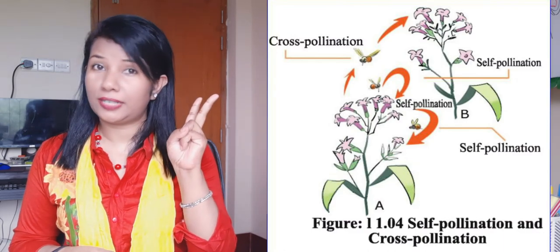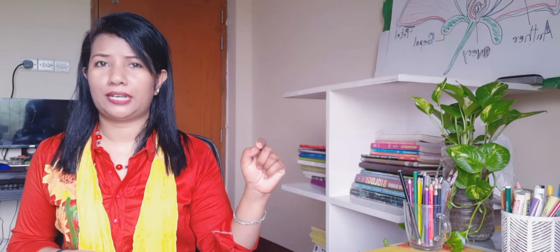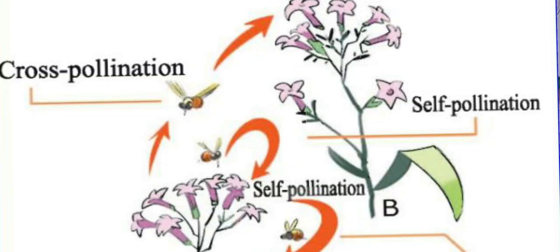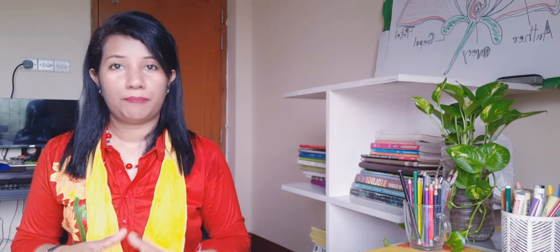There are two types of pollination: self-pollination and cross-pollination. Self-pollination is when pollen grains are transferred to the stigma of the same flower or a different flower on the same plant. Cross-pollination is when pollen is transferred between two distinct flowers of the same species — for example, cotton or papayas — meaning different plants but the same species.